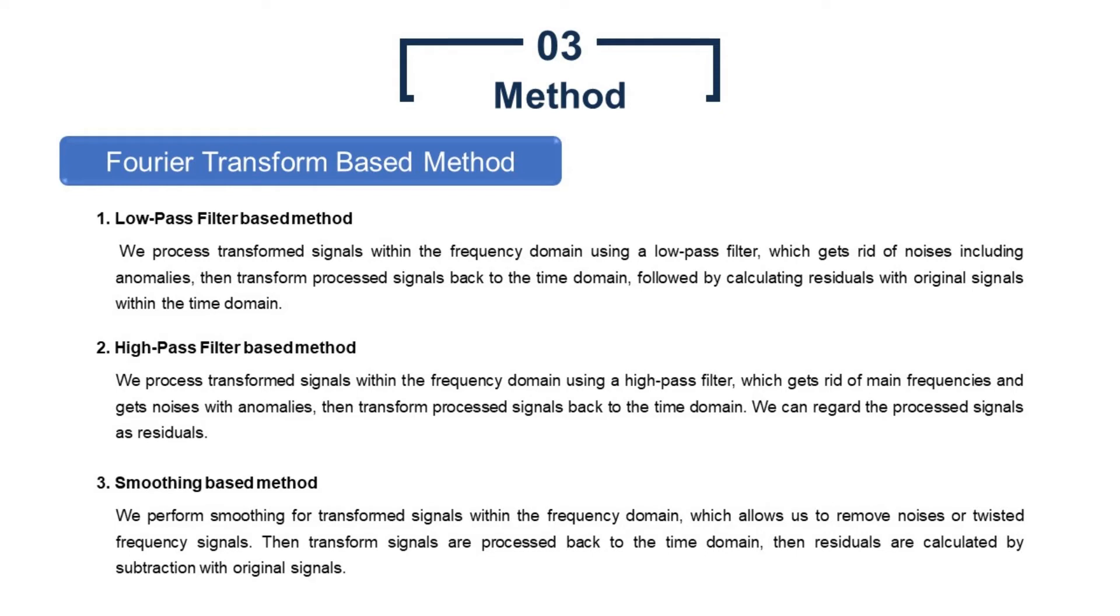More specifically, we implemented three methods. 1. Low-pass filter-based method. We process transformed signals within the frequency domain using a low-pass filter, which gets rid of noises including anomalies, then transform processed signals back to the time domain, followed by calculating residuals with original signals within the time domain. 2. High-pass filter-based method. We process transformed signals within the frequency domain using a high-pass filter, which gets rid of main frequencies and gets noises with anomalies, then transform processed signals back to the time domain. We can regard the processed signals as residuals. 3. Smoothing-based method. We perform smoothing for transformed signals within the frequency domain, which allows us to remove noises or twisted frequency signals. Then transformed signals are processed back to the time domain. Then residuals are calculated by subtraction with original signals.